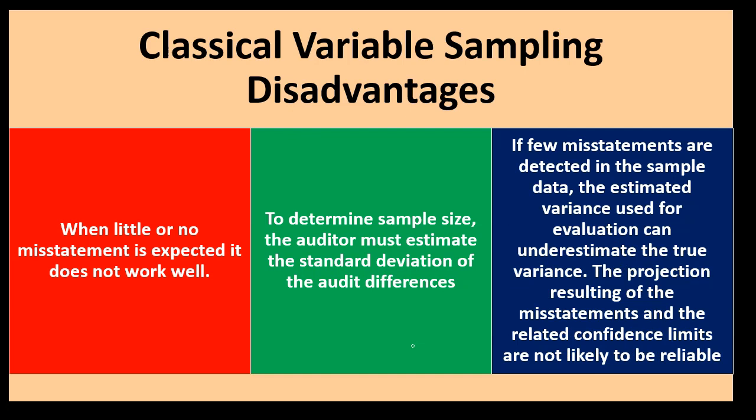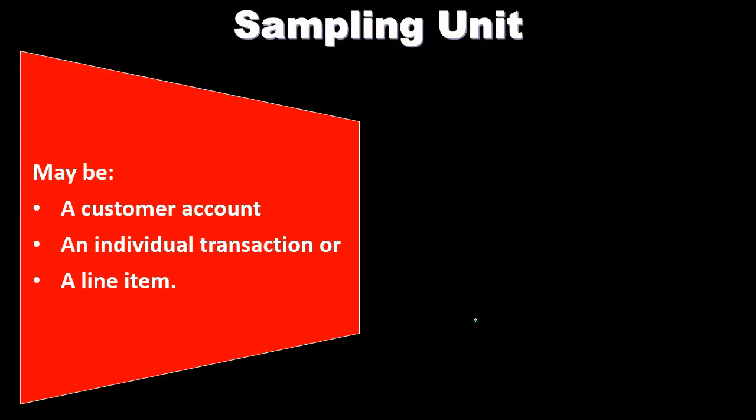If few misstatements are detected in the sample data, the estimated variance used for the evaluation can underestimate the true variance. These few misstatements cause a problem. The projection of the misstatements and the related confidence limits are not likely to be reliable under those conditions.